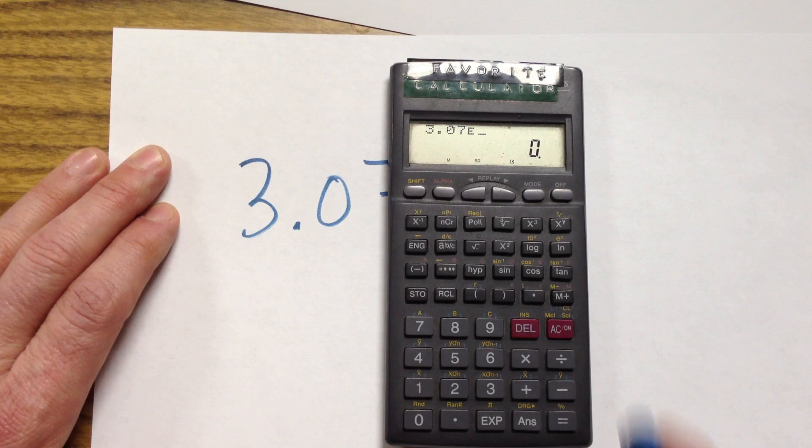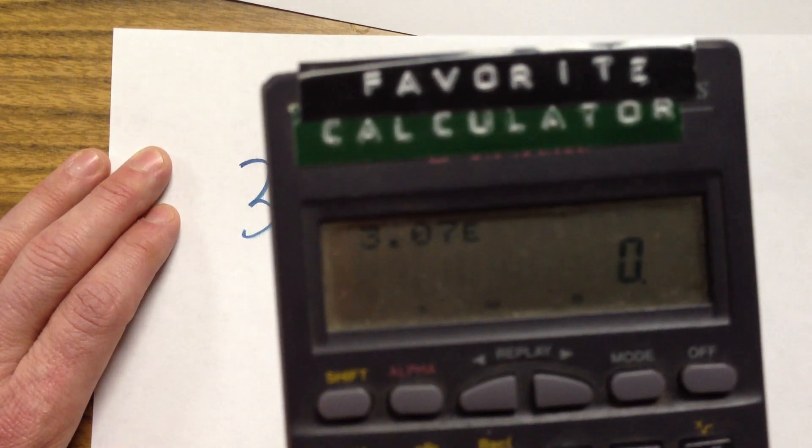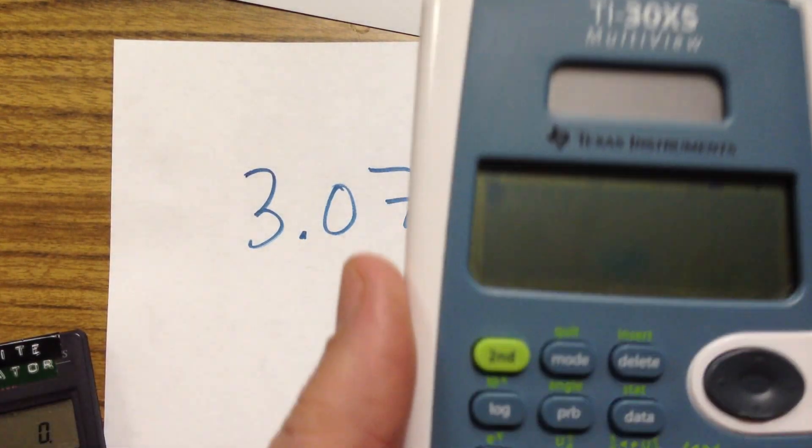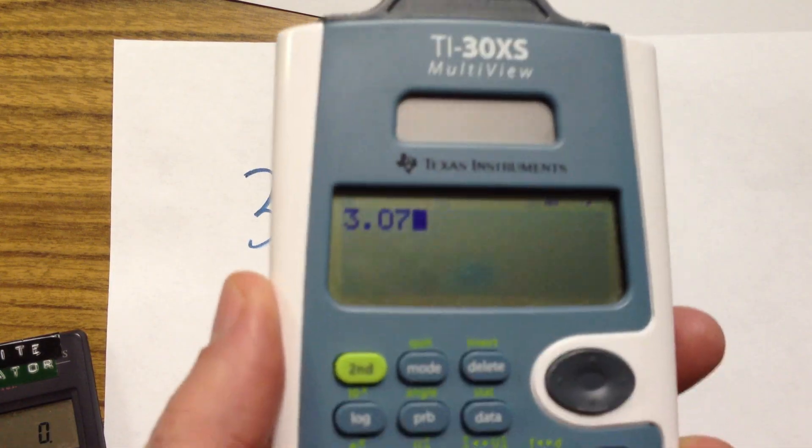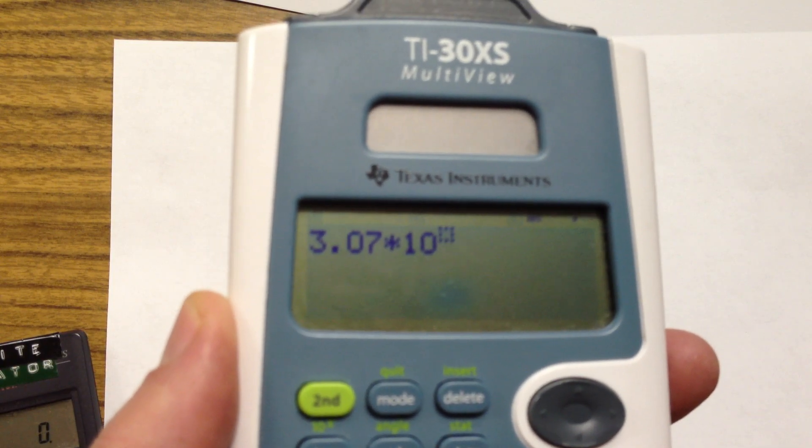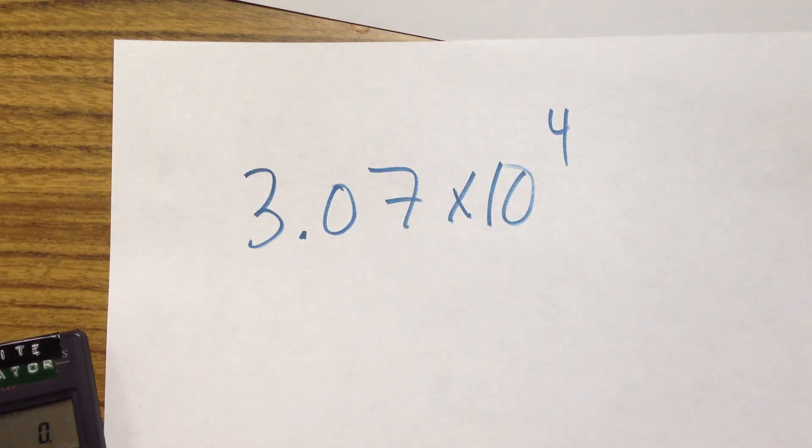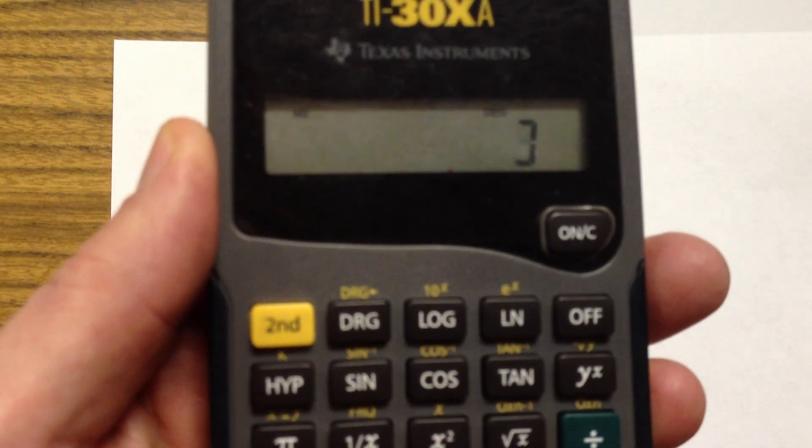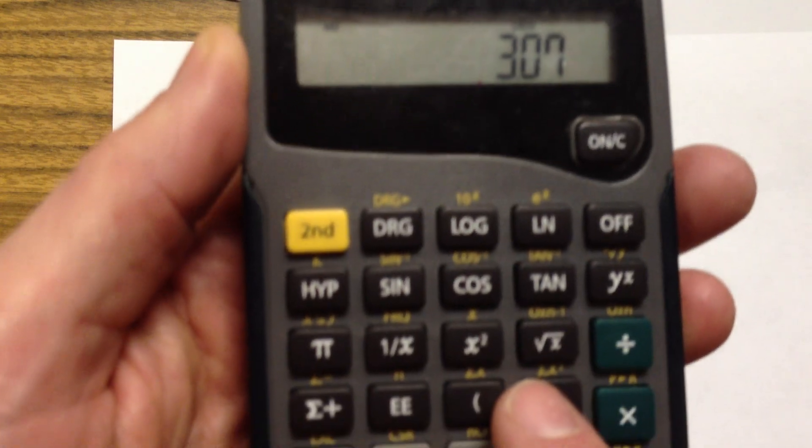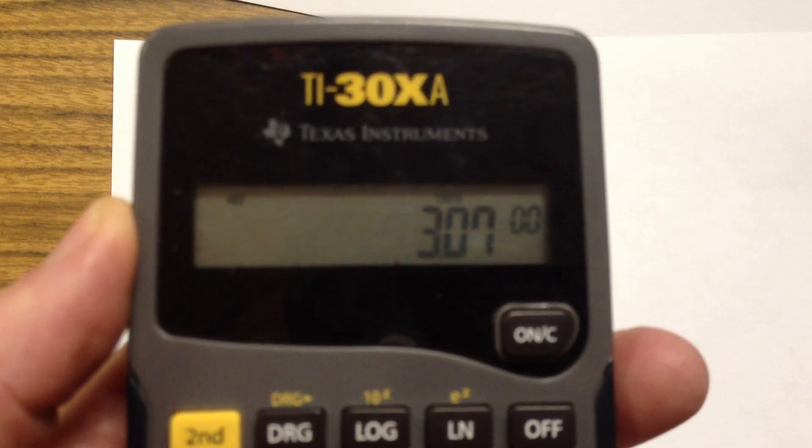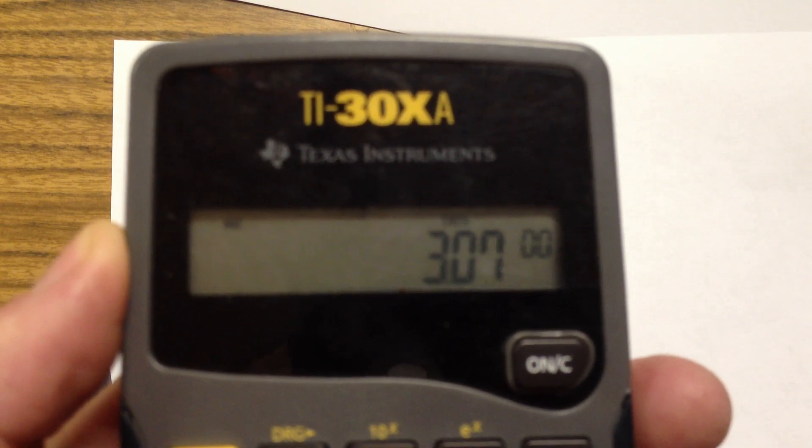And different calculators show it differently. This calculator puts a capital letter E there. Other calculators, if I were to use the math calculator, I hit 3.07. And whenever I hit this times 10 to the button, it comes up times 10 to the. So, it's pretty obvious that they put that 10 in there. And it's waiting for that exponent. And on the old TI's, on the EE's over here, it's going to look like 3.07. And then my EE button here on this particular calculator shows, doesn't show the 10 at all. It just shows the exponent. You can tell that I'm waiting for the exponent.